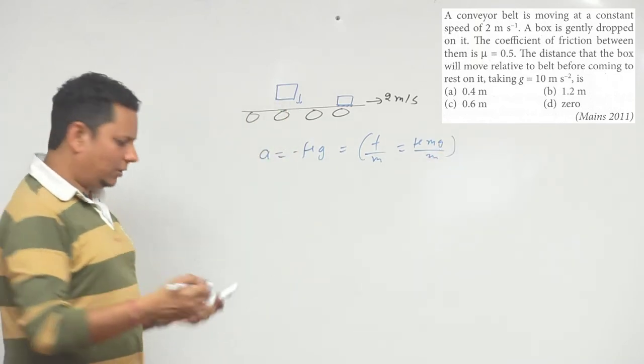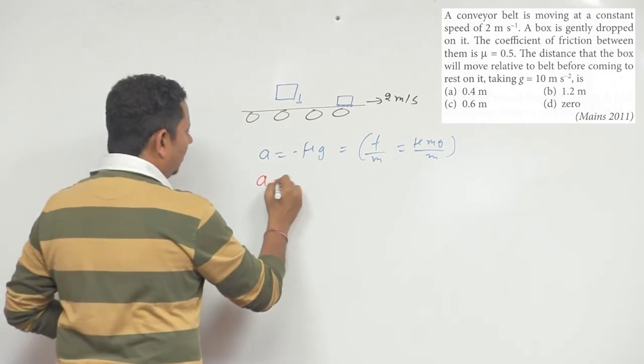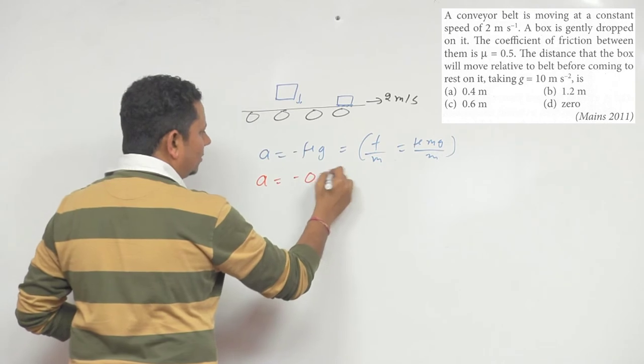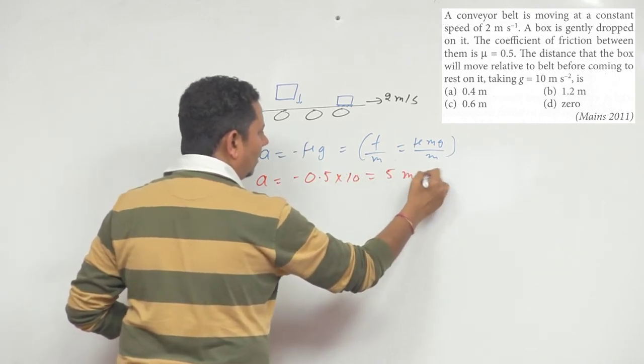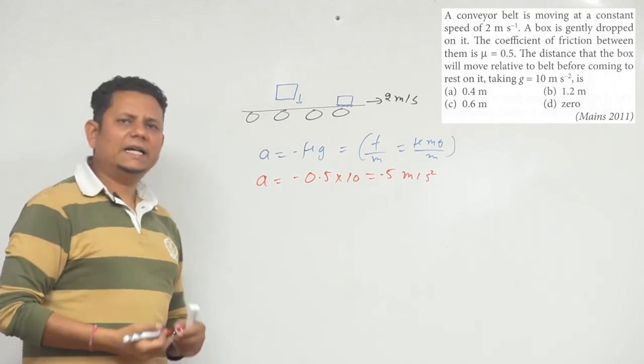Now if we put in our values, the retardation will be: a equals minus 0.5 times 10, that equals 5 meter per second square. This value is negative because it's retardation.